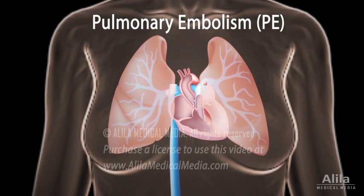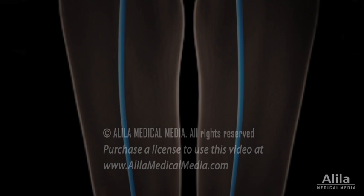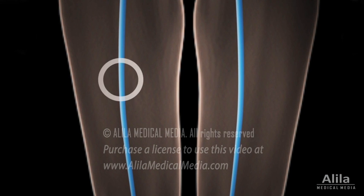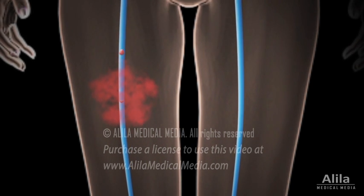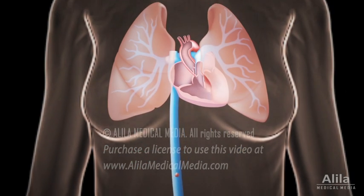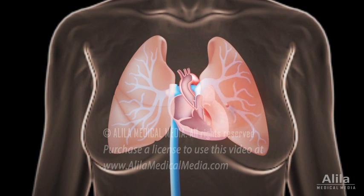Acute pulmonary embolism refers to a sudden obstruction in one or more arteries of the lungs by a lump of material called an embolus, originated elsewhere in the body. Typically, it is caused by a blood clot or thrombus that forms most often in a deep vein of a lower limb. Pulmonary embolism occurs when part of this thrombus breaks off, passes via the bloodstream to the lungs, gets stuck, and blocks pulmonary arteries.